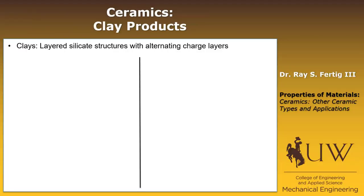The first one we want to talk about are clay products. From previous lectures, clays are layered silicate structures with alternating charge layers — a silicate layer, then an aluminum-based layer, then silicate, then aluminum-based, which is an example of the kaolinite clay we talked about previously. Typically, clay products are divided into two categories.